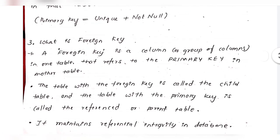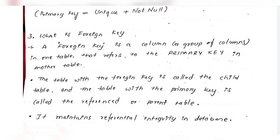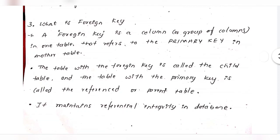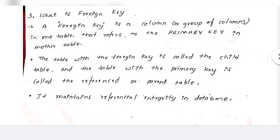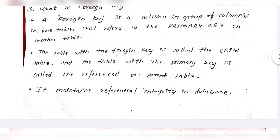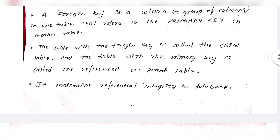What is a foreign key? A foreign key is a column or a group of columns in a table that refers to a primary key in another table. The table with the foreign key is called the child table, and the table with the primary key is called the reference or parent table.